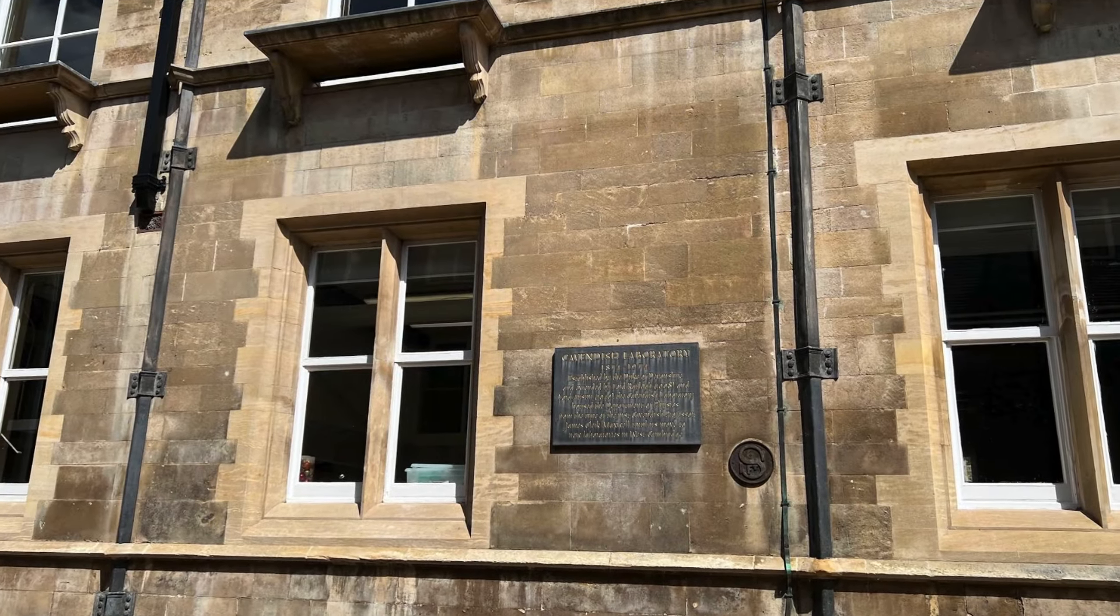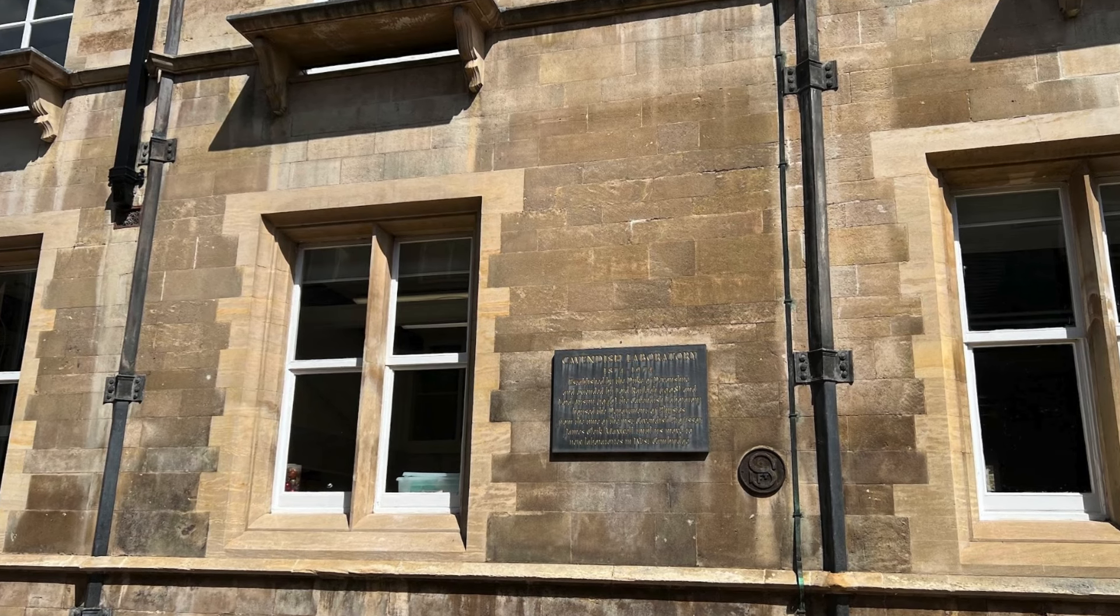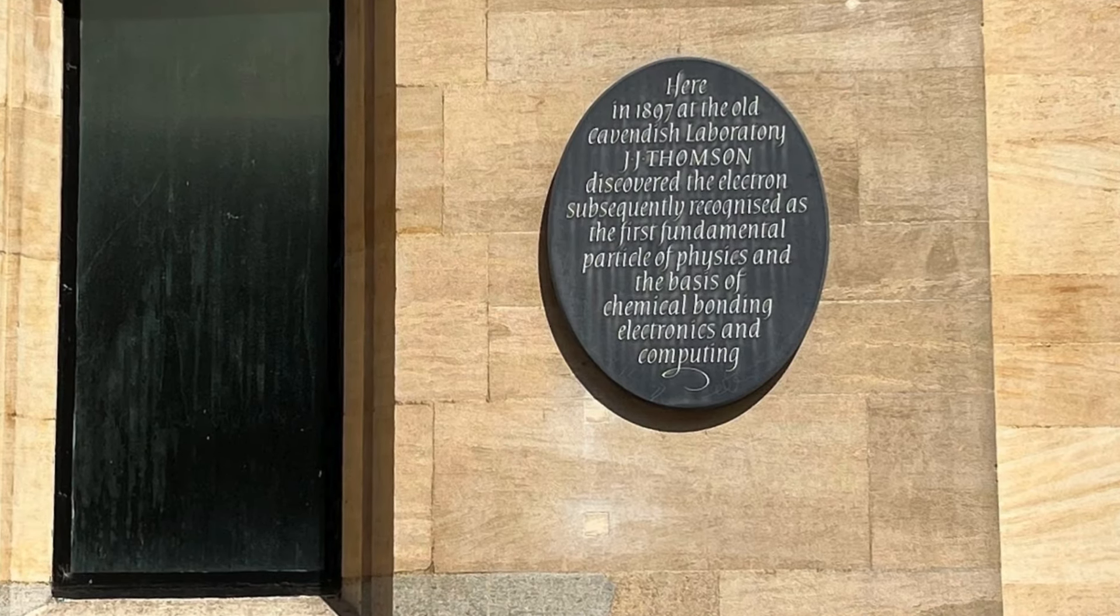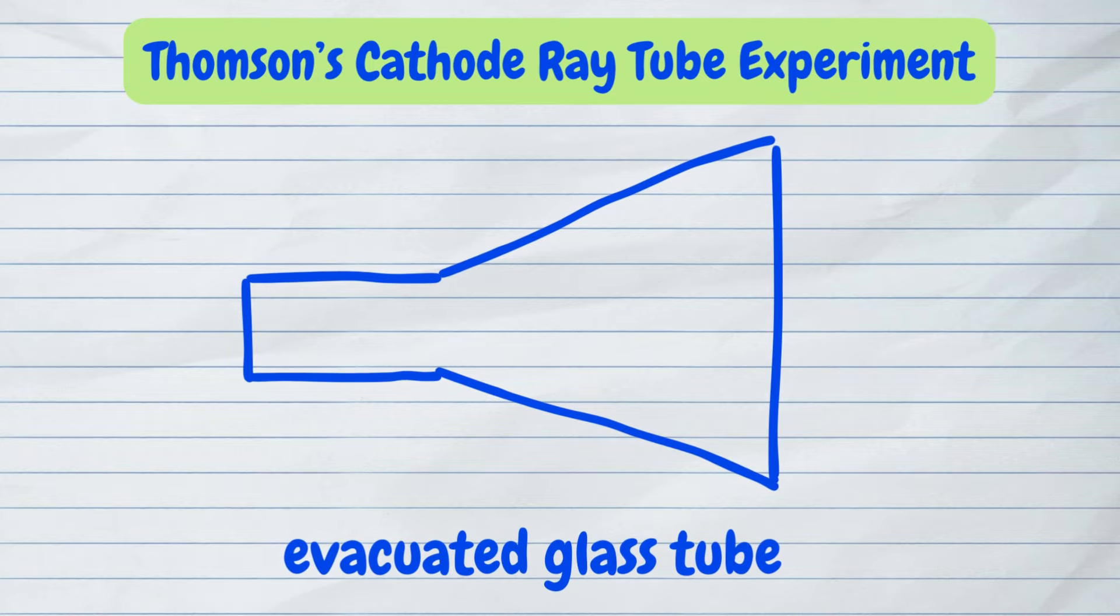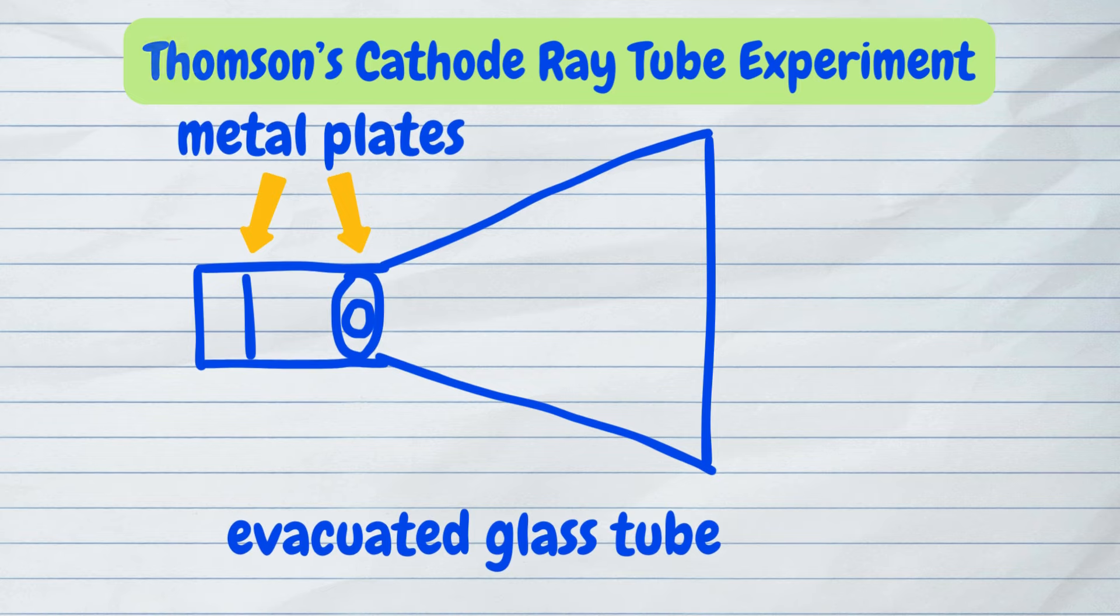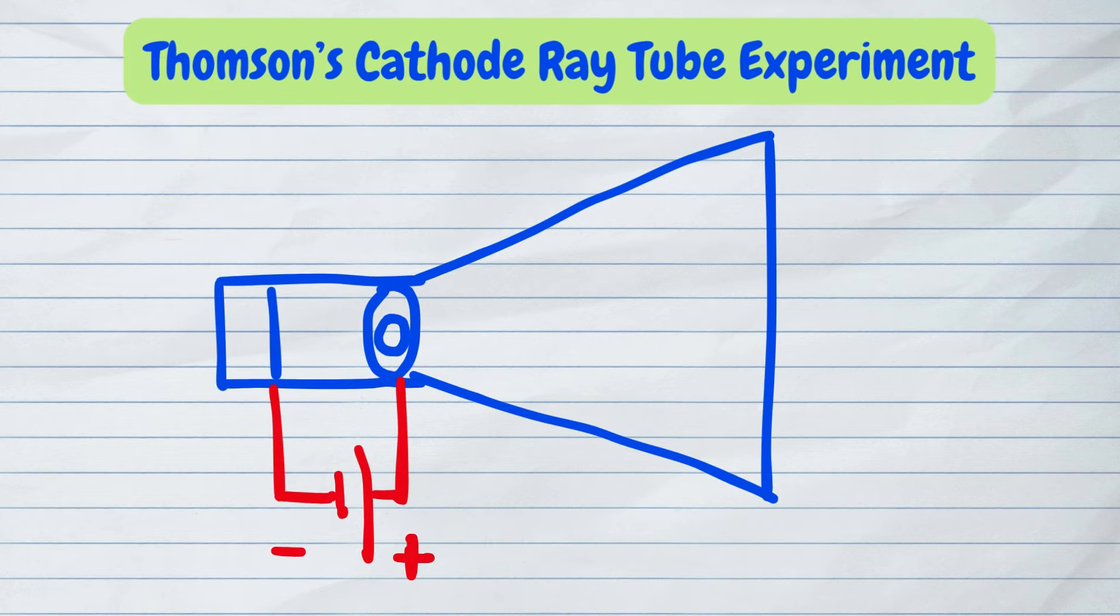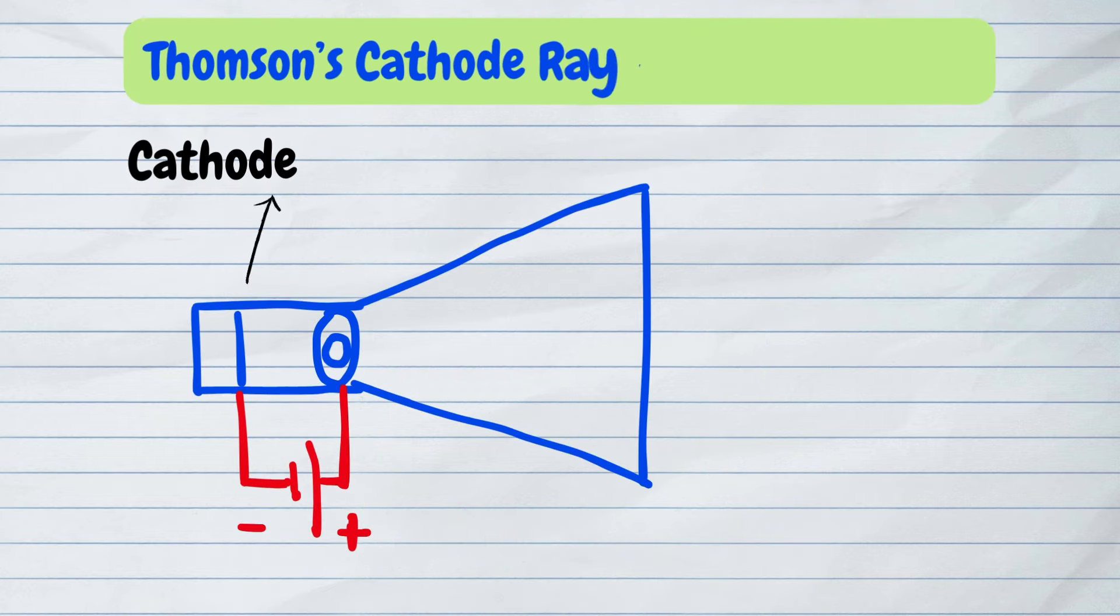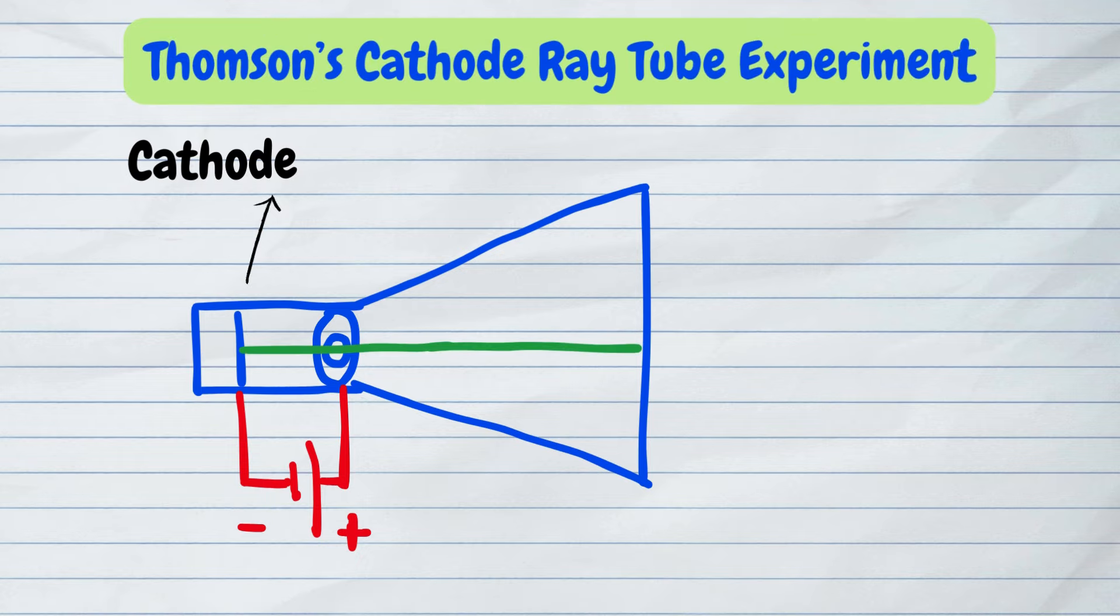In 1897, J.J. Thompson conducted his famous cathode ray tube experiment. The cathode ray tube is a glass tube that is evacuated which contains two metal plates connected to a high voltage source. The cathode, which is the negatively charged plate, emits an invisible ray.